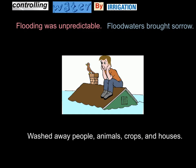Water is the source of life for these communities, but waters can also be sorrowful because of flooding. Flooding was very unpredictable. Eventually the early people of Mesopotamia will figure out a season in which flooding happens, but originally it was unpredictable. These floodwaters would wash away people, animals, destroy their crops, and wash away their homes — because their homes are made out of mud and sticks, essentially.